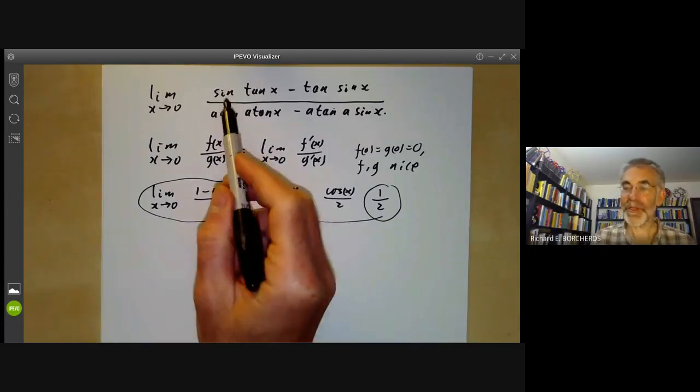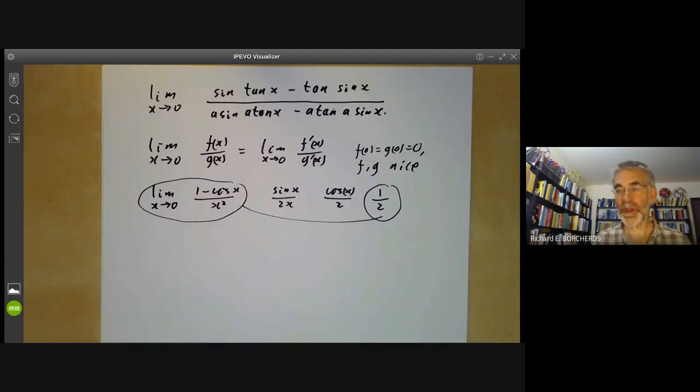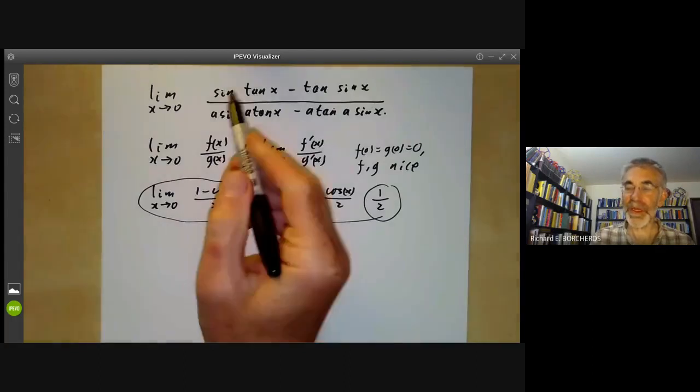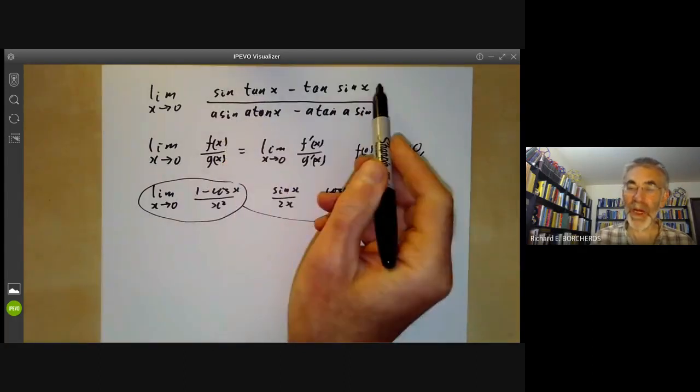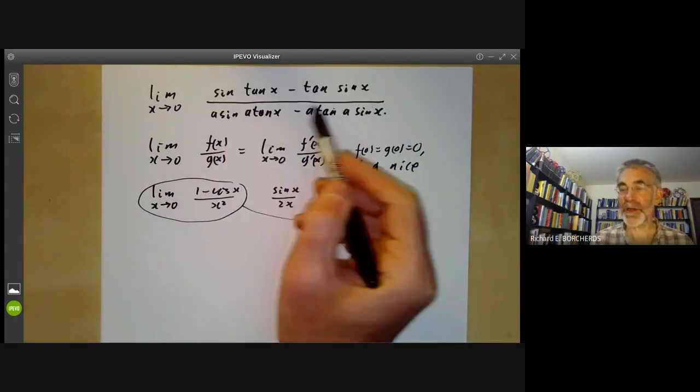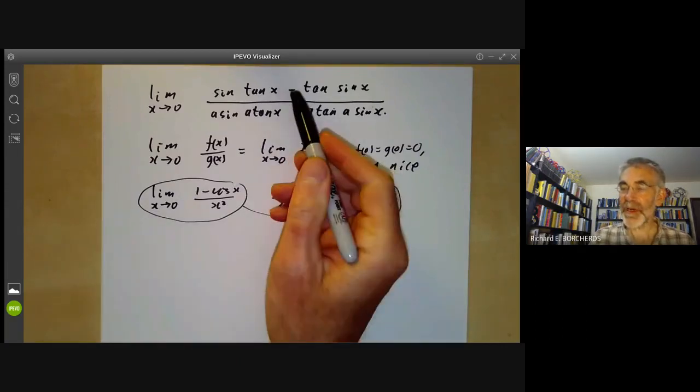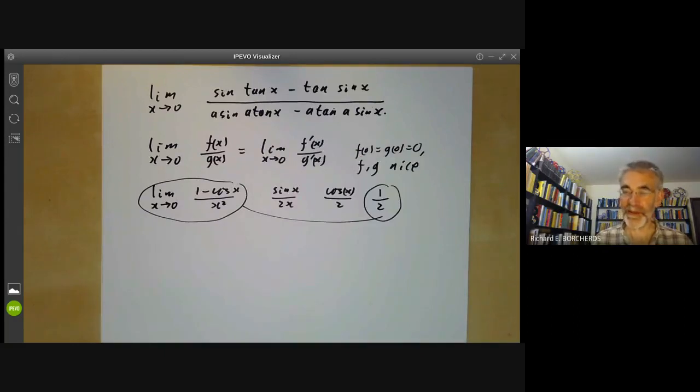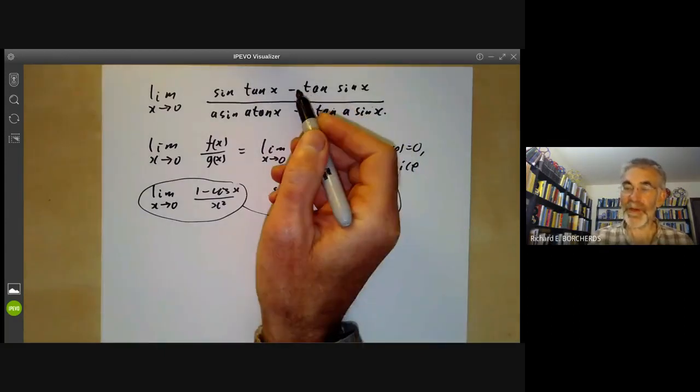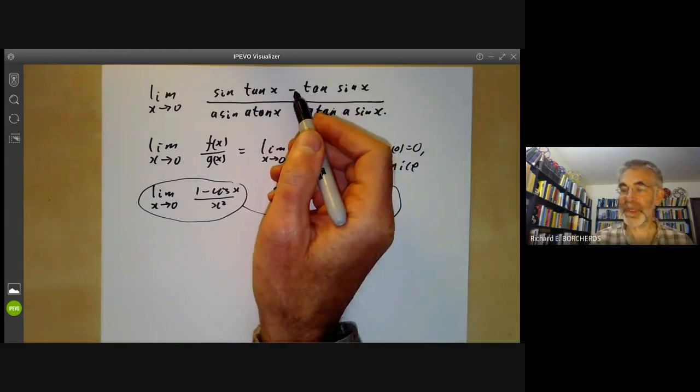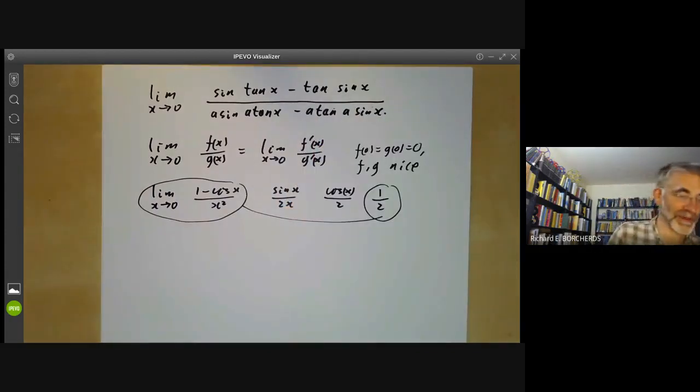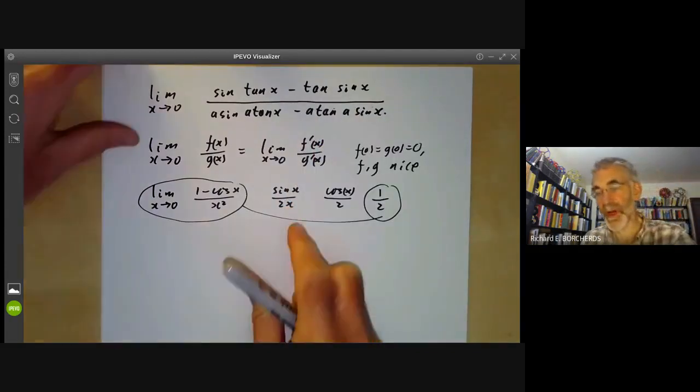And every time you differentiate it, it gets about twice as horrible as it was before because of Leibniz's rule. So doing it seven times, the expression you get is going to be about a hundred times as large as this. You can do this on a computer algebra system. I tried it on one and it managed the numerator and gave up on the denominator. It said the numerator, if you take its derivative seven times and take the limit, you get minus 168.